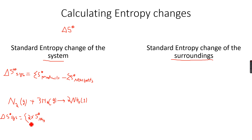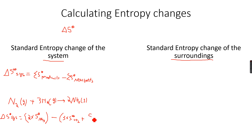Since there are 2 moles of ammonia, we multiply the entropy of ammonia by 2. Then we subtract 3 times the entropy of hydrogen, because the stoichiometric coefficient of H2 is 3, plus the entropy of nitrogen. The stoichiometric coefficient of N2 is 1, so we multiply by 1, which is just the entropy of N2.